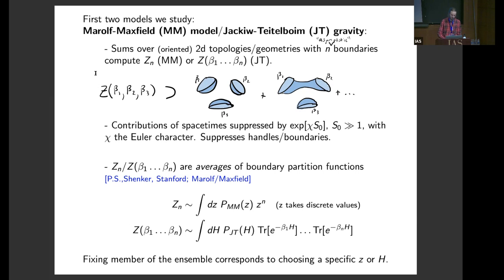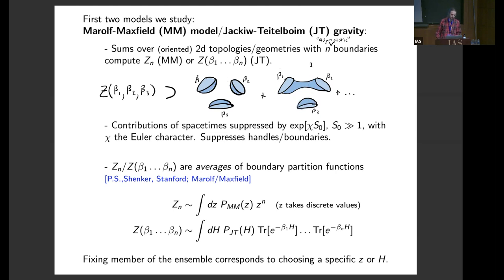I've pictured here some sample contributions to the three-boundary quantity of JT gravity — this is like the calculation of three partition functions in JT gravity, and we've included one contribution here with a space-time wormhole linking two boundaries. In both of these models, contributions of space-times are suppressed by a factor involving the Euler character, meaning complicated wormholes are further suppressed. The most important fact about these models for us is that these N-boundary path integrals are not ordinary partition functions, but are in fact equal to averages of boundary partition functions.